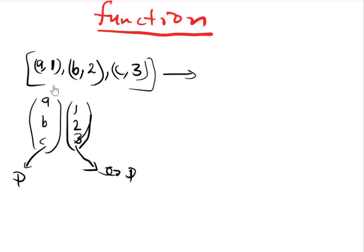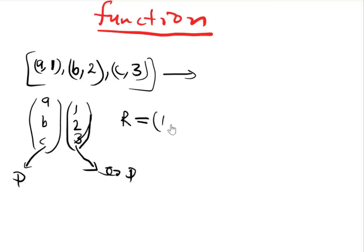This part is called the domain and this part is called the co-domain. In this case, the domain and co-domain are equal. So if you are asked to find the range, the range is the same as the co-domain — which is {1, 2, 3}. This should be your range.